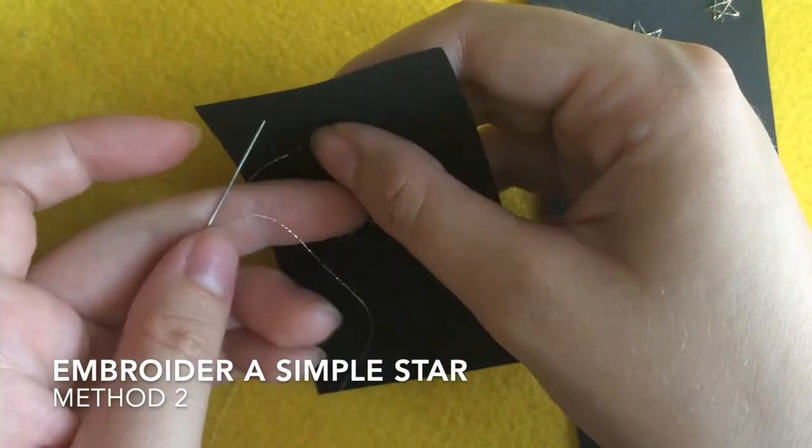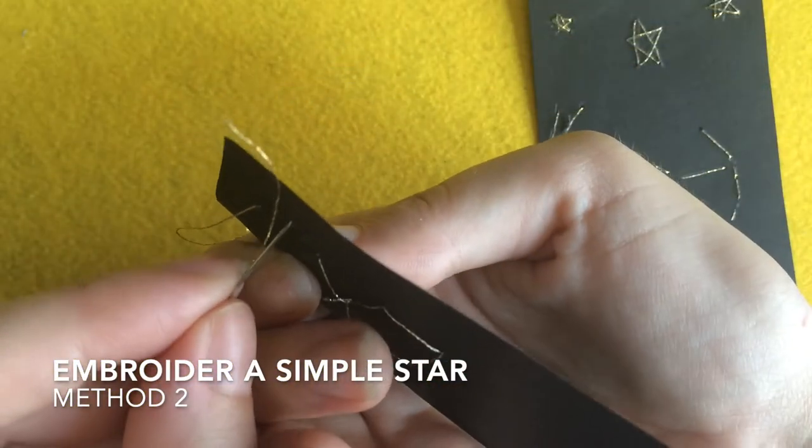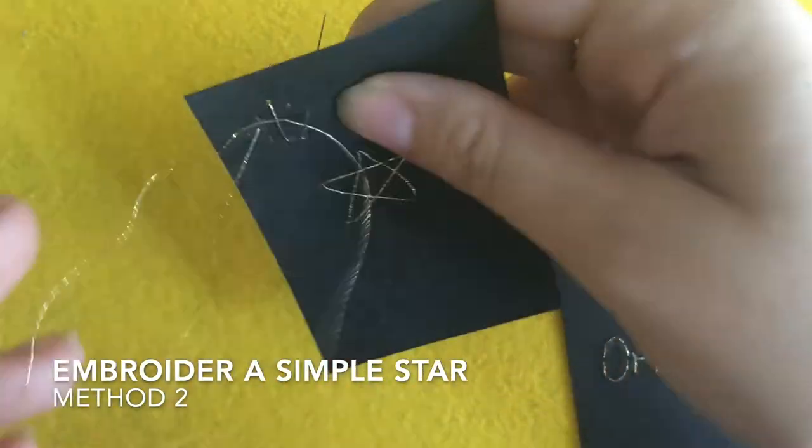If you're embroidering multiple things on your paper, don't bother cutting the thread, just move on to the next part. If you're running out of thread, loop it around a nearby stitch and tie it off.